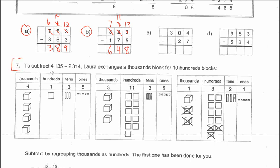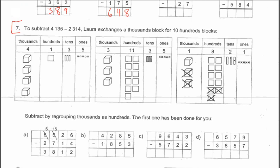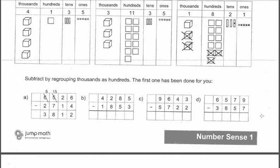So question 7 is now getting into the thousands. And sometimes we have to borrow from the thousands into the hundreds. And it works exactly the same way.